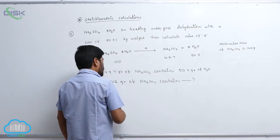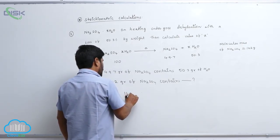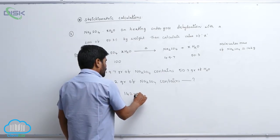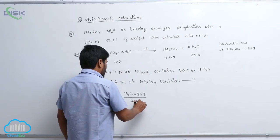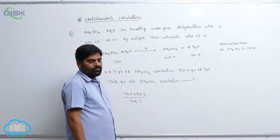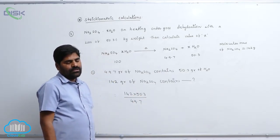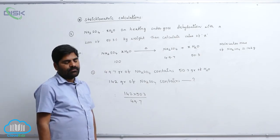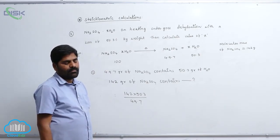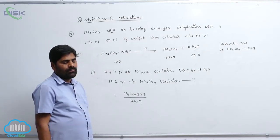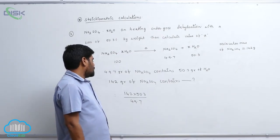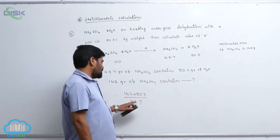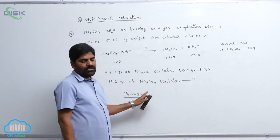So, therefore, 142 into 50.3 by 49.7. 142 into 50.3 by 49.7. How much is left over?